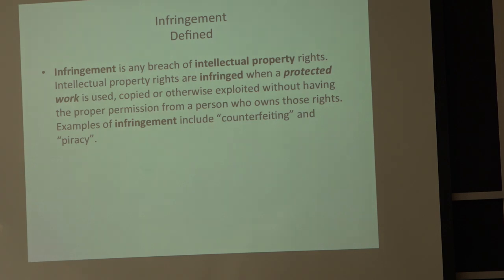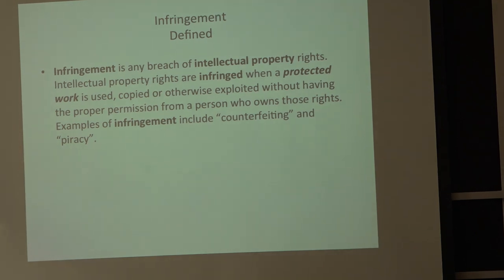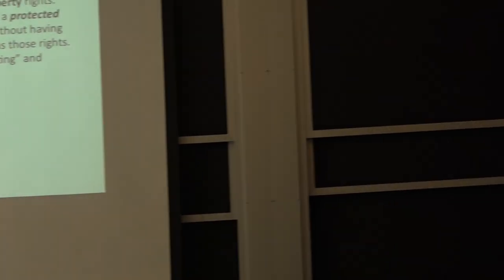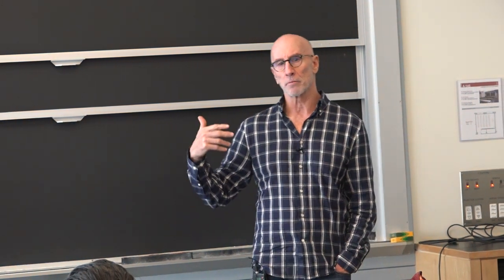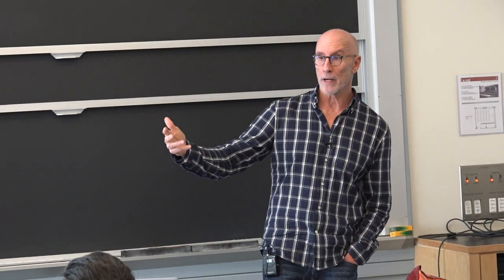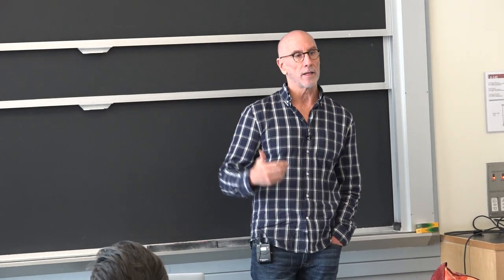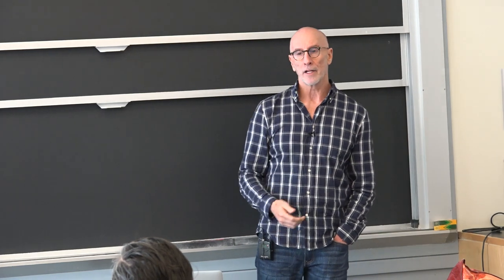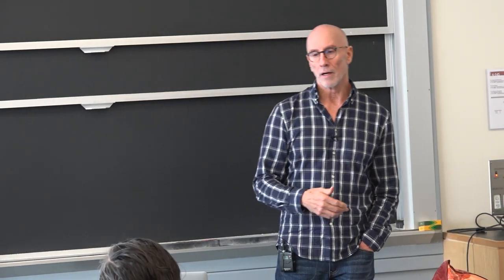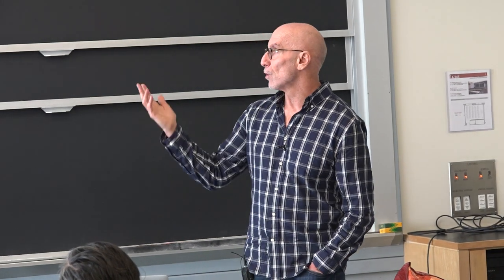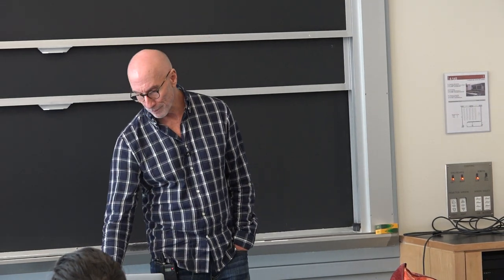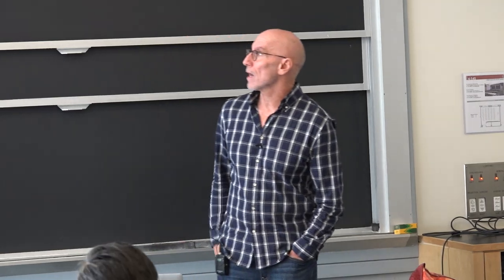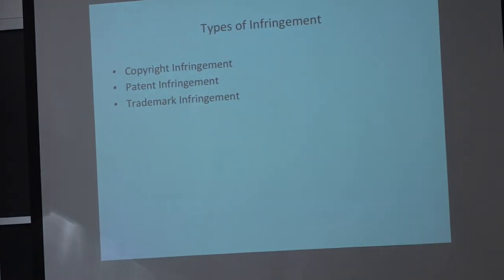Common examples of infringement include counterfeiting and piracy. Piracy, in this context, means ripping off a motion picture — if you take a picture released by Hollywood and exploit it for commercial purposes, that's piracy. Counterfeiting, of course, everybody knows what that is; it actually is a form of intellectual property infringement. The types of infringement are copyright infringement, patent infringement, and trademark infringement.